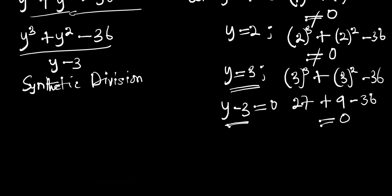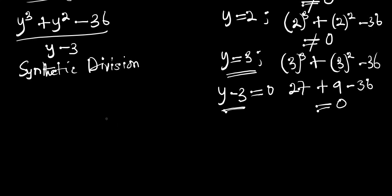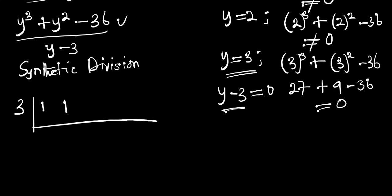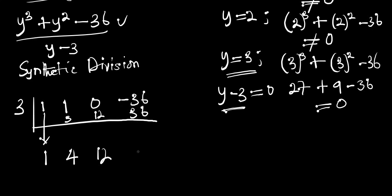In synthetic division, we use the root y equals 3. The coefficients from the numerator are: the coefficient of y to the power 3 is 1, the coefficient of y to the power 2 is 1, there is no y to the power 1 so the coefficient is 0, and the constant is negative 36. We bring down the first 1, multiply 3 by 1 to get 3, add 1 plus 3 to get 4, multiply 3 by 4 to get 12, add 0 plus 12 to get 12, multiply 3 by 12 to get 36, and add negative 36 plus 36 to get 0.